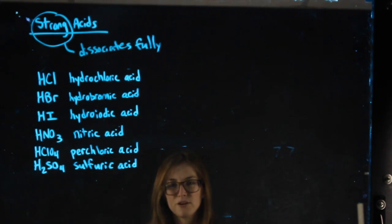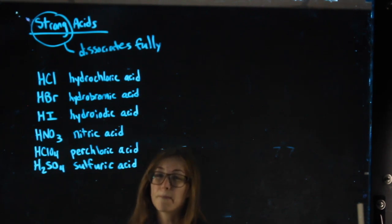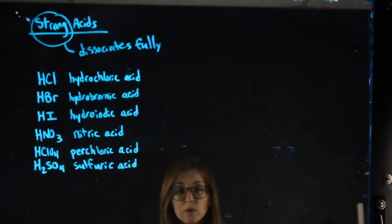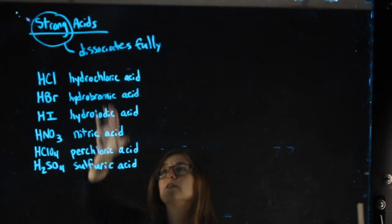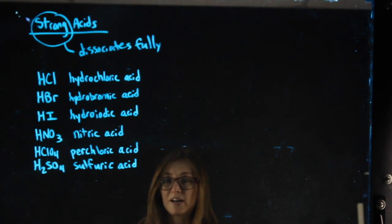Last week, you finished up KSP. KSP was always looking at things that barely dissociated, so we used equilibrium arrows and ICE charts. Something that fully dissociates, we don't have to use equilibrium arrows, we don't have to use ICE charts. We go back to essentially using mole ratios.